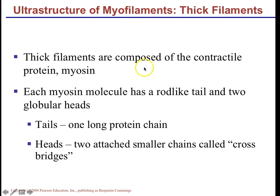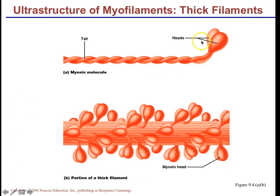Myosin is the thick filament. It has a rod-like tail and two heads at the end of the tail. The heads are able to form cross bridges and attach to actin. Many many myosin molecules with many tails and many heads make up the thick filament, which is why it appears dark in the striations — because it is so large.